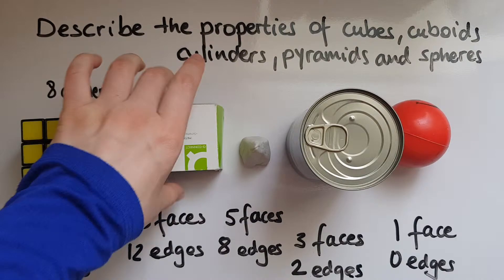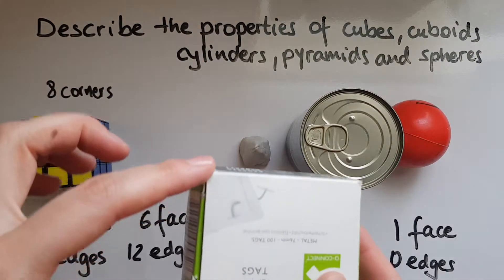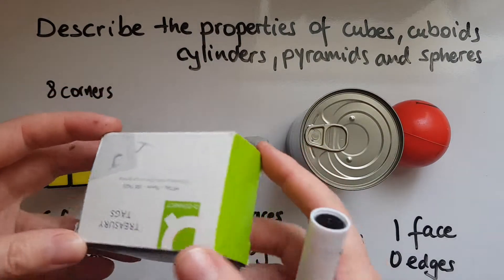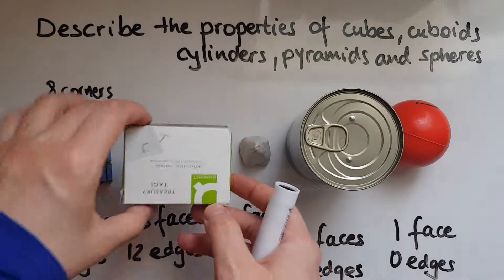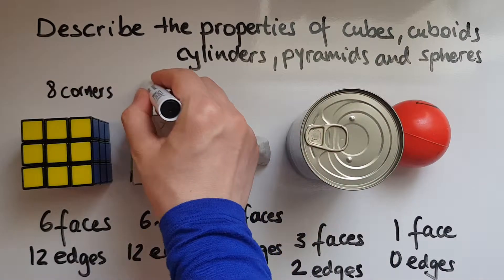How about a cuboid? Counting: one, two, three, four, five, six, seven, eight. So again the same number — eight corners.